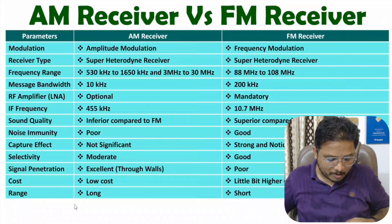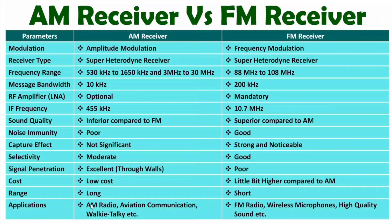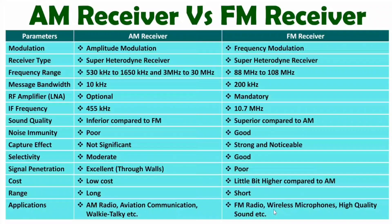The last parameter is applications. With AM receiver we have AM radio (530 kHz to 1650 kHz), aviation communication, and walkie talkie. With FM receiver we have FM radio (88 MHz to 108 MHz), wireless microphones, and high quality sound communication.